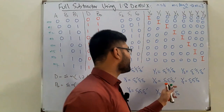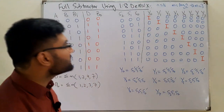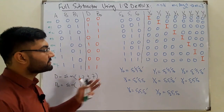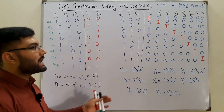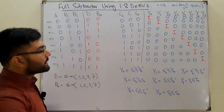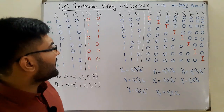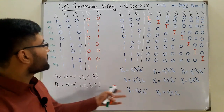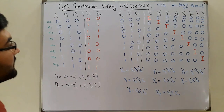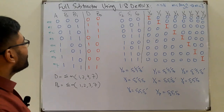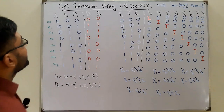You can draw the circuit yourself — you need eight 3-input AND gates, one for each output. Connect the select lines (and their complements) appropriately to each gate. If you want, I will draw it here.